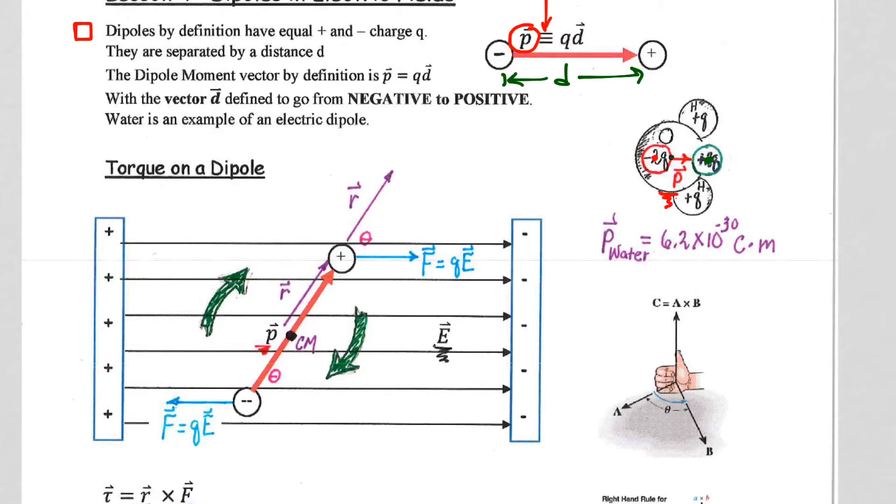There's a dipole moment vector for water, and you don't need to memorize it. It will be given to you, but I have it written here for reference: 6.2 times 10 to the minus 30. Look at the units: p equals q coulombs times d meters, so coulomb-meters.